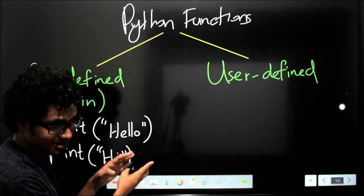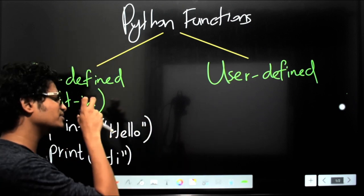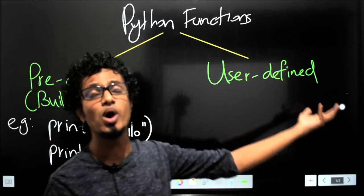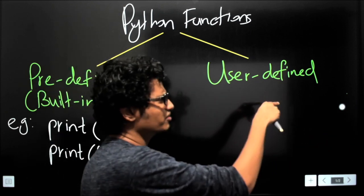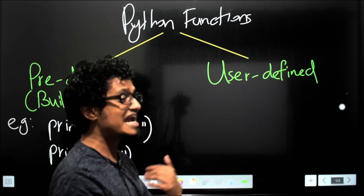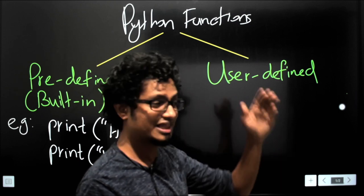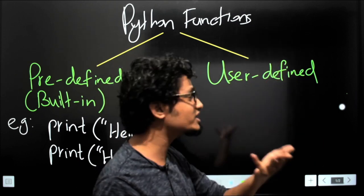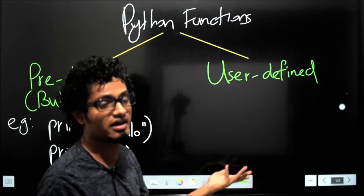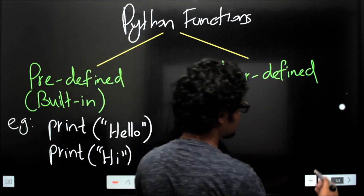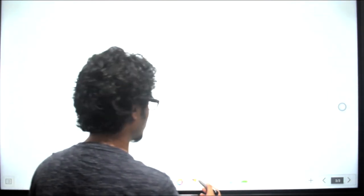So, based on the values that we pass for the function, the way the function works can be different. With that in mind — user-defined functions: the functions defined by us, the programmers. We can create functions in the Python source code as we type, and make use of those functions to achieve certain tasks within the program. Let's see how to define user-defined functions.